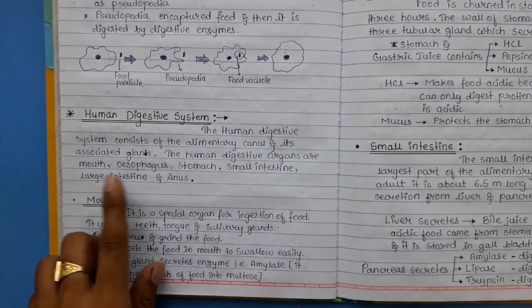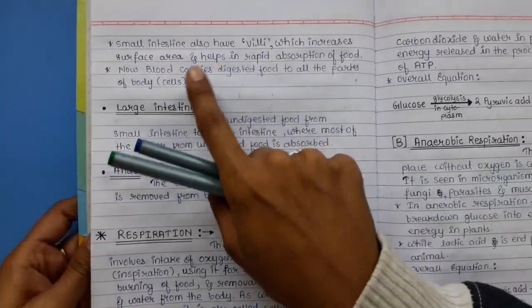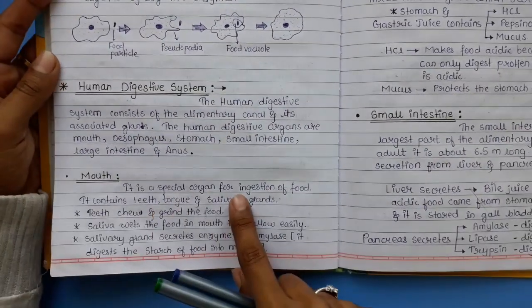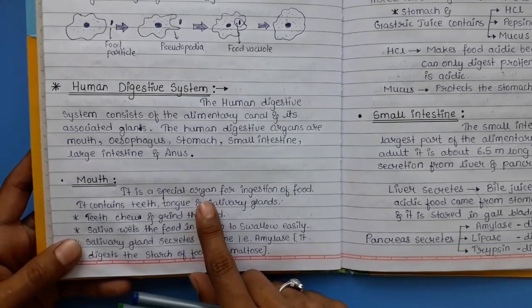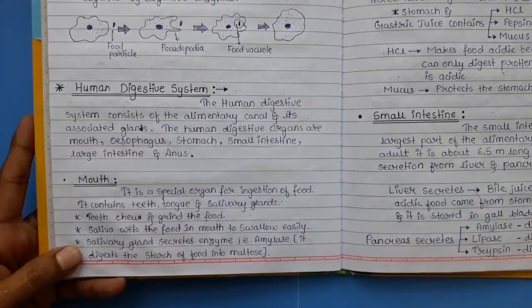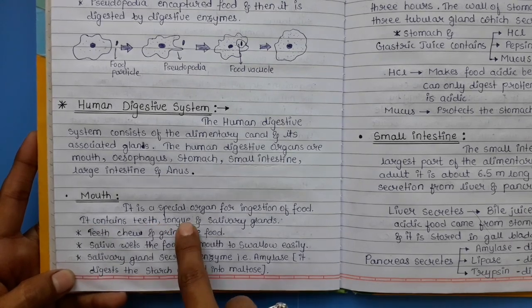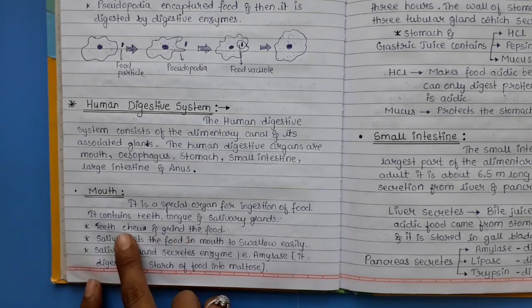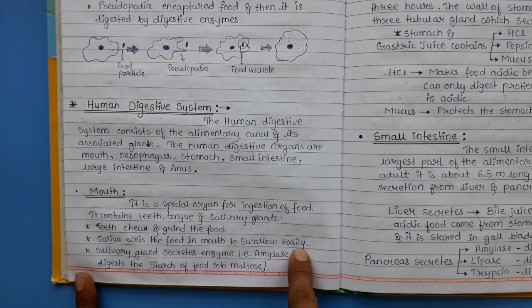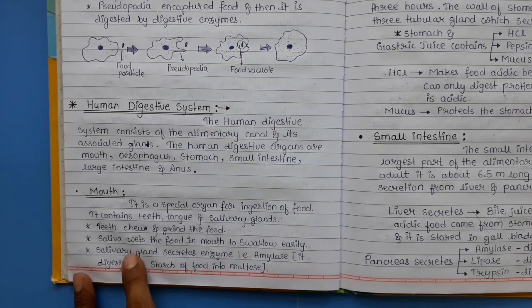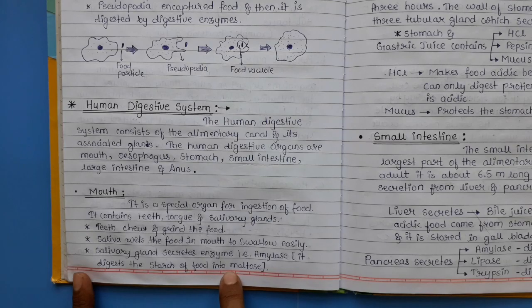Salivary glands secrete an enzyme called amylase, which digests starch in food and converts it into maltose. Now, oesophagus: the partly digested food from the mouth goes down to the oesophagus. It is a muscular tube through which food is moved by peristaltic movement. At the end there is an oesophageal sphincter that keeps food from passing backward from the stomach.